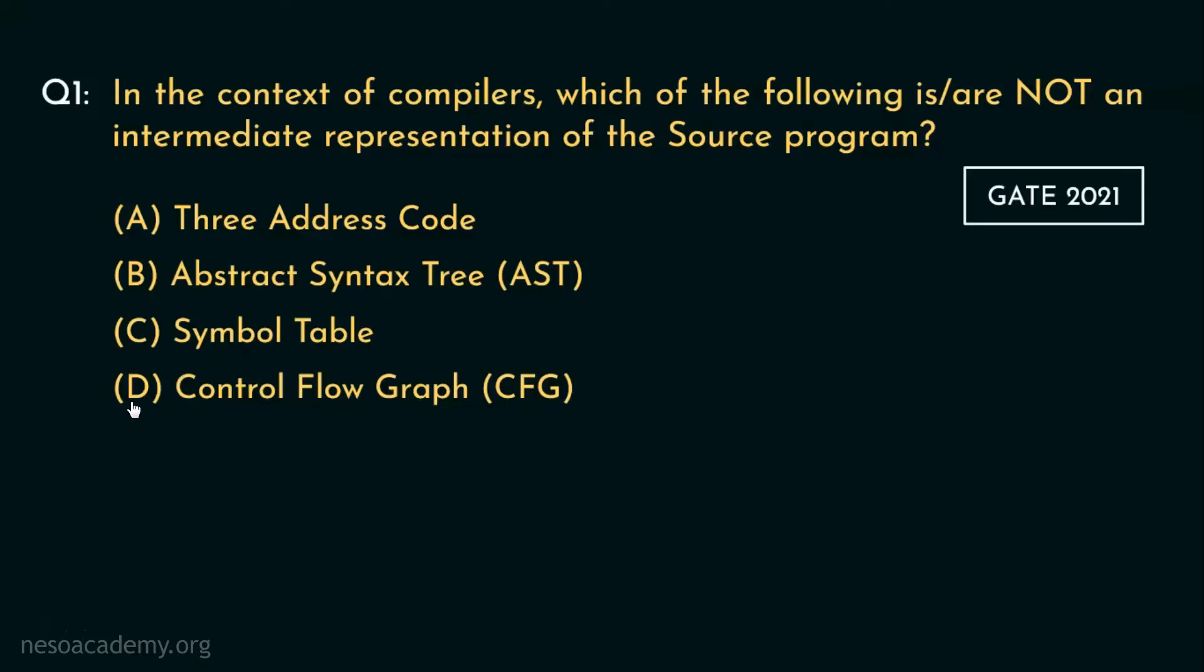Now Control Flow Graph or CFG is a representation using graph notations of all the paths that might be traversed through a program during its execution. Moreover, Control Flow Graphs is a topic pertaining to the subject software engineering, and the question here clearly states we are to judge the options in the context of compilers. Since the options A, B and D are now eliminated, option C is undoubtedly the correct one.